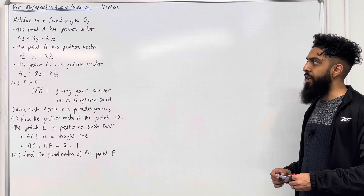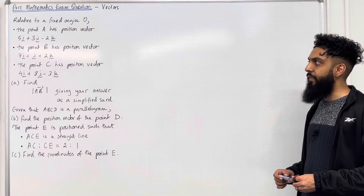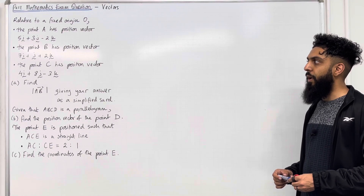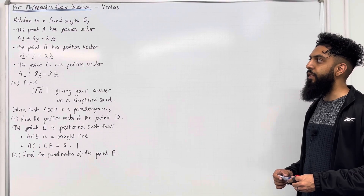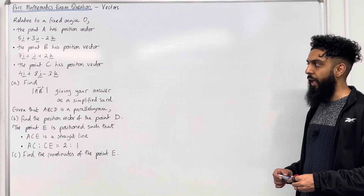Relative to a fixed origin O, the point A has position vector 5i + 3j − 2k. The point B has position vector 7i + j + 2k. The point C has position vector 4i + 8j − 3k.